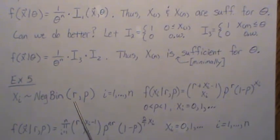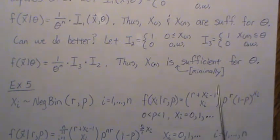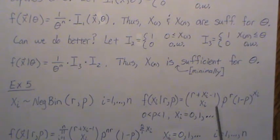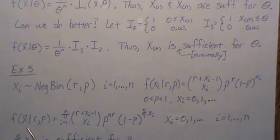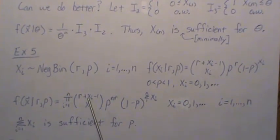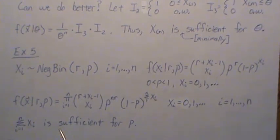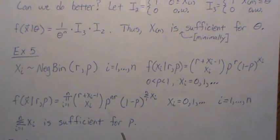In Example 5, let Xi be negative binomial with known value R and parameter P. The probability mass function is the standard negative binomial form, with support 0, 1, 2, 3, and noting there are different ways to write this density. The joint distribution is the product of the marginals. The combinatorial piece is a function of the Xi's only, and the remaining piece is a function of the parameter and data only through the sum of the Xi. So the sum of Xi is sufficient for P.